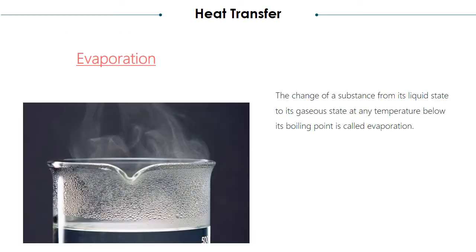Evaporation: many times a liquid changes into its vapor state even below its boiling point. For instance, wet clothes hung out in the sun, mopping the floor, and wet hair dry up with time. The change of a substance from its liquid state into its gaseous state at any temperature below its boiling point is called evaporation. In a liquid, the molecules are in constant random motion. Their speed keeps changing due to collisions with other molecules. If molecules near the surface gain sufficient energy, they escape and become vapor.